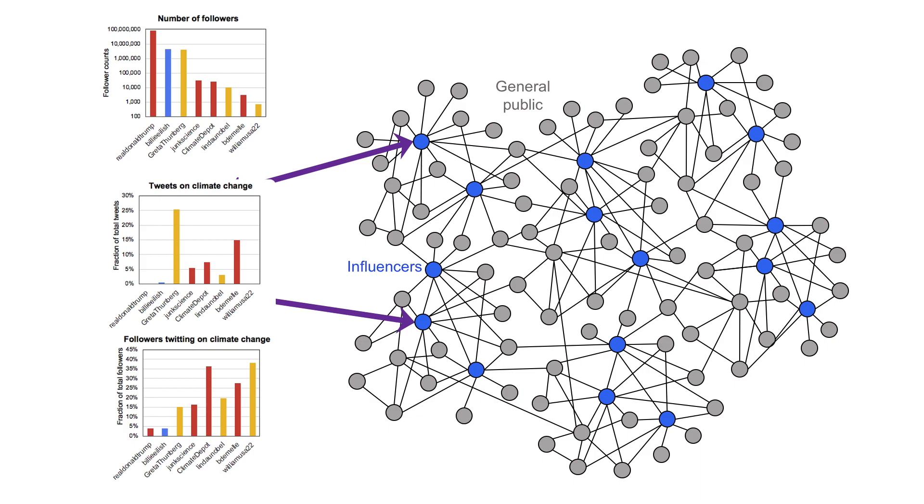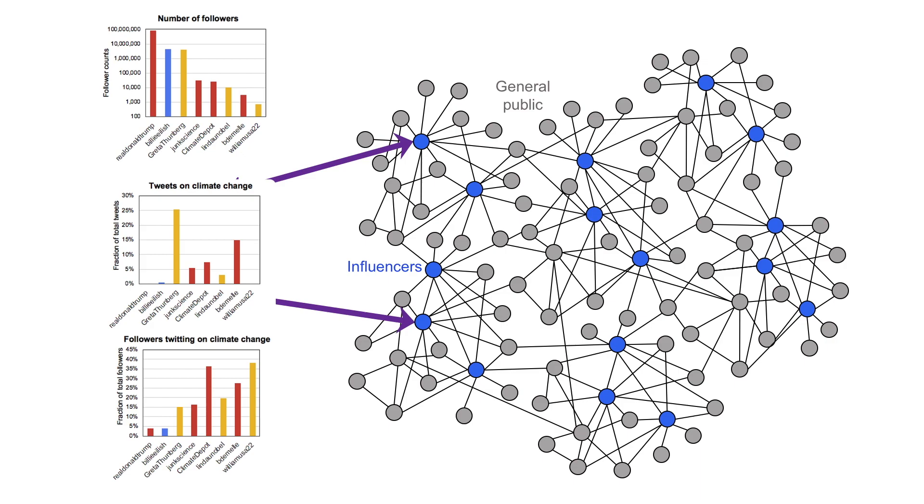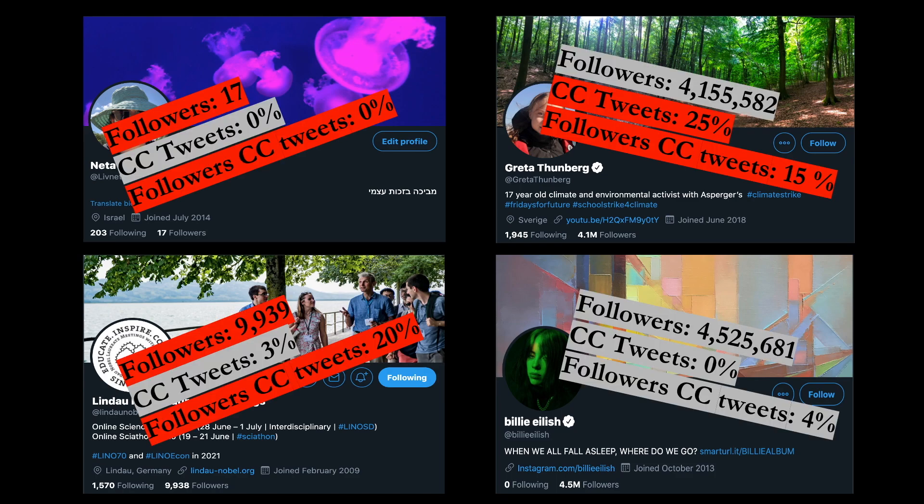Our idea is to identify influencers who have many followers that did not yet express their interest in climate change. Nowadays, many people have a Twitter account, but with very different numbers of followers. Still, targeting influencers with a large number of followers is not enough for our purposes.